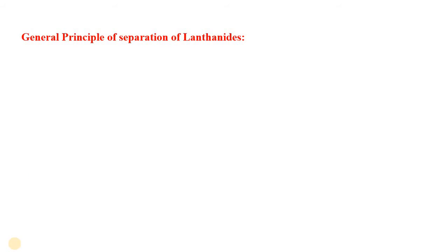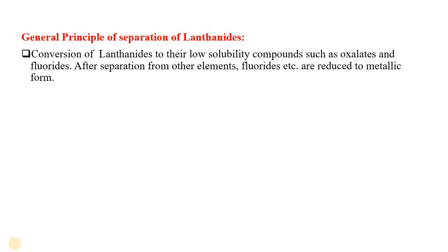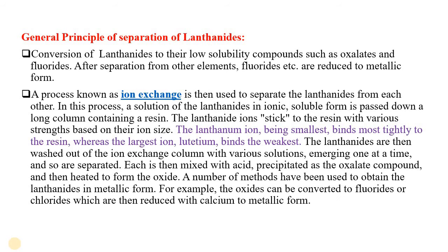The general principle of separation of lanthanides can be discussed as follows. Conversion of lanthanides to their low-solubility compounds such as oxalates and fluorides. After separation from other elements, fluorides and chlorides etc. are reduced to metallic form by using calcium and other methods. The ion exchange process is the most important process for the separation of lanthanides from each other.